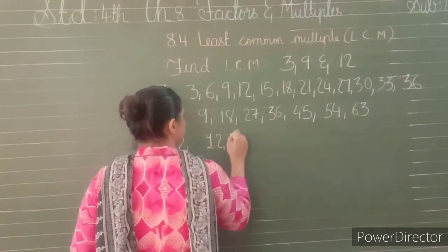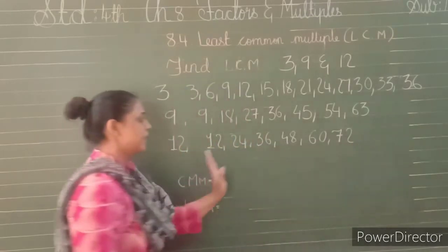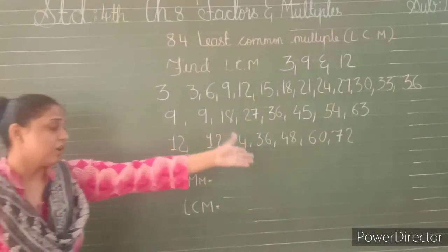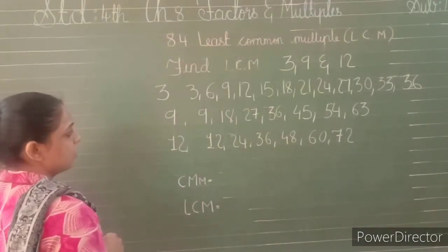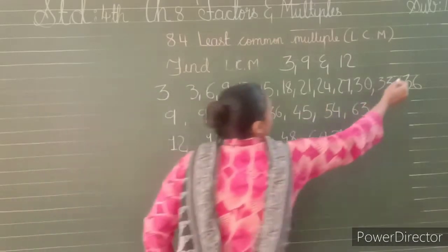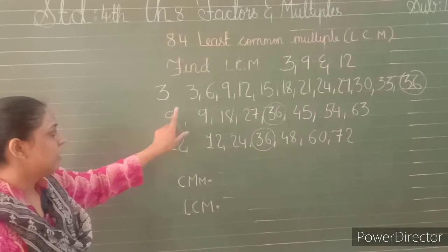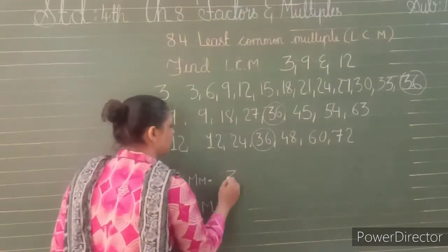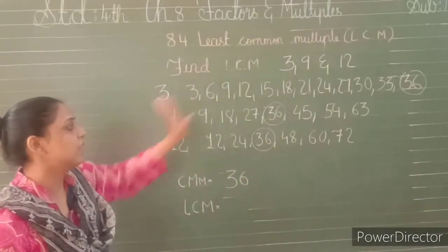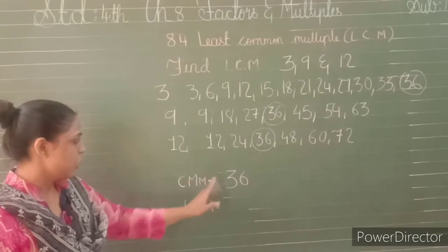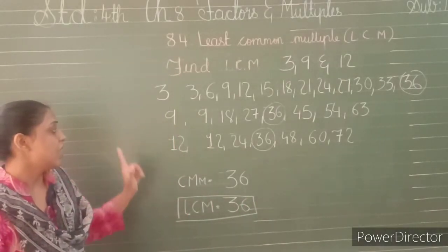Now multiples of 12: 12 ones are 12, 12 twos are 24, 12 threes are 36, 12 fours are 48, 12 fives are 60, 12 sixes are 72. Till 72 we have found out the multiples of 12. Now we find out which is the common number among all three: 36 is present in multiples of 3 (3 × 12), in multiples of 9 (9 × 4), and in multiples of 12 (12 × 3). So 36 is the common number and it is the smallest, so the LCM of 3, 9, and 12 is 36.